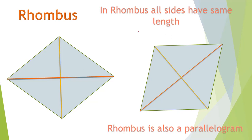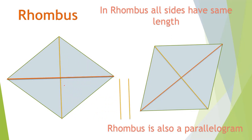In a rhombus, all sides have the same length, and a rhombus is also a parallelogram. So diagonals in a rhombus must bisect each other, because that is a property of parallelograms. The yellow segments are equal and the red segments are equal.